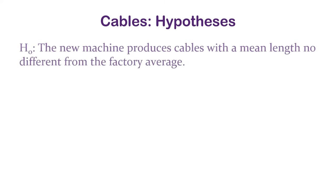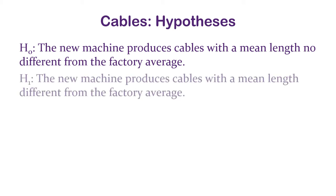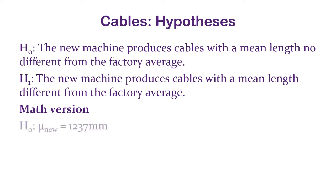The null hypothesis: the new machine produces cables with a mean length no different from the factory average. The alternative: the new machine produces cables with a mean length different from the factory average. A non-directional hypothesis — natural here, no need to force it.